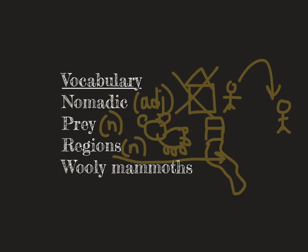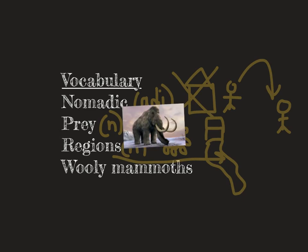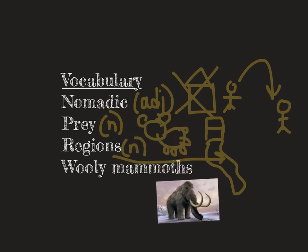Your last word is woolly mammoths. Woolly mammoths were large mammals that are now extinct, and they used to roam parts of North America and Asia and were hunted by the prehistoric people who migrated from Asia to North America. Here's a picture of what a woolly mammoth was thought to have looked like. On your notepaper, go ahead and write down a definition for each of these vocabulary words.